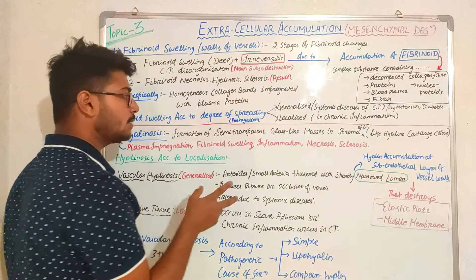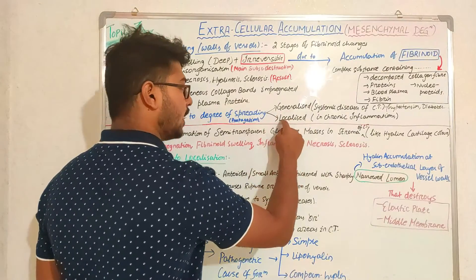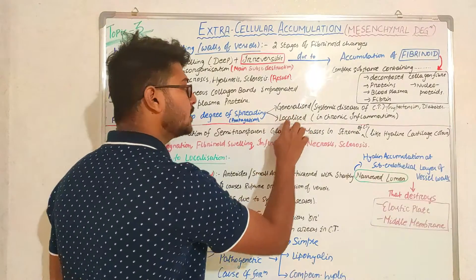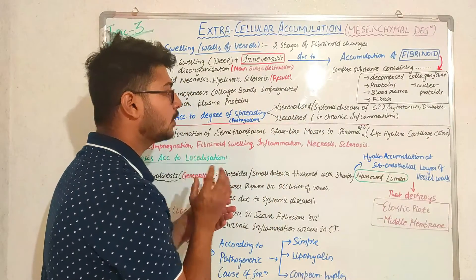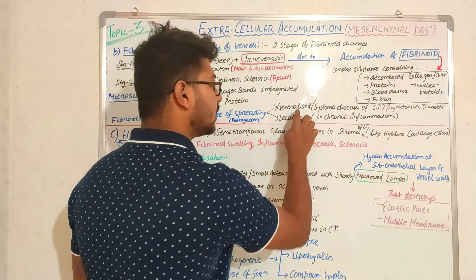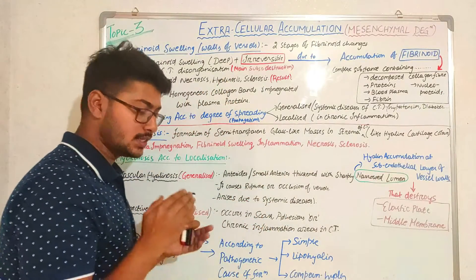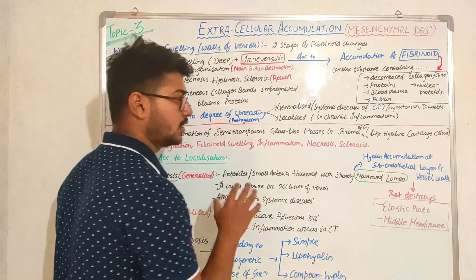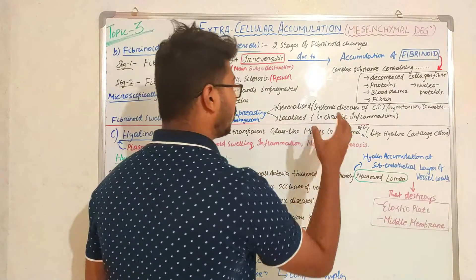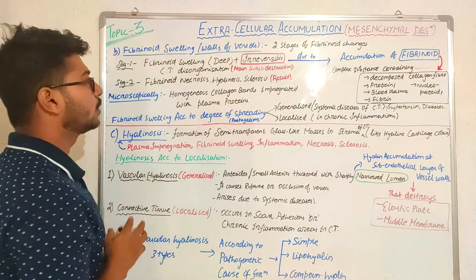Fibrinoid swelling can be divided into two types according to the degree of spreading: generalized and localized. If the swelling is present all over the body it is generalized; if present in a particular organ or region it is localized. Generalized causes may be systemic diseases of connective tissue such as hypertension or diabetes, while localized may occur due to chronic inflammation of the connective tissue.